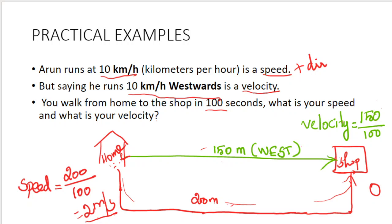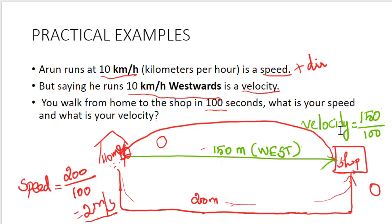Let us consider another condition: you returned from the shop back to your home. You started from home, went to the shop, and immediately returned to home. Your starting and end points are the same, so your total displacement is zero. Therefore your velocity will also be zero. In any condition, your speed will not become zero, but if displacement is zero, velocity will also become zero.